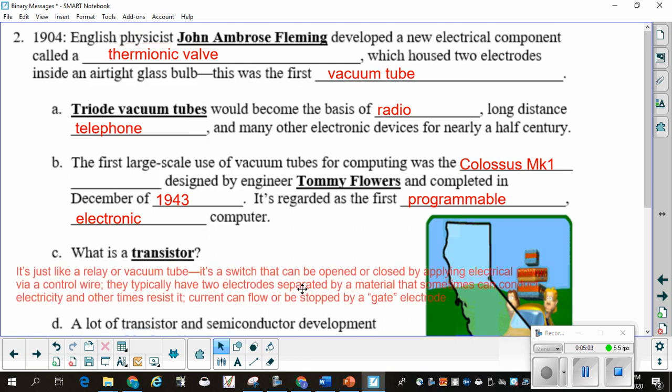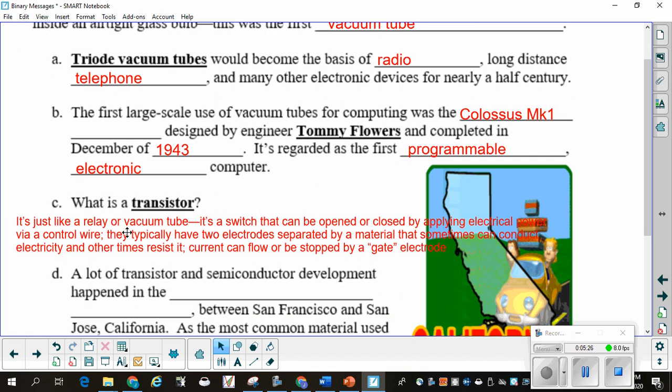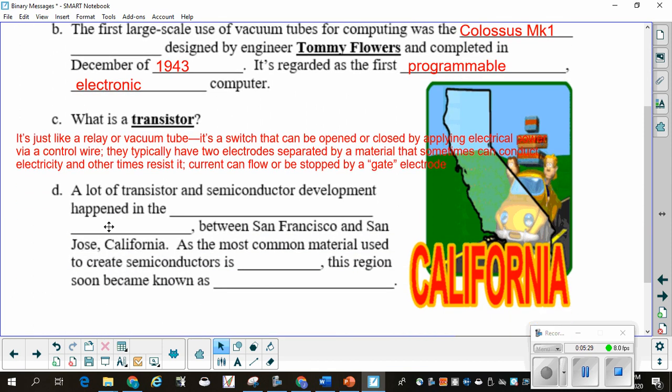A transistor. It's like a relay or a vacuum tube. It's a switch that can be opened or closed by applying electrical power via a control wire. Typically, you have two electrodes separated by material that sometimes can conduct electricity and other times resist it. Current can flow or be stopped by a gate electrode. It's similar to a relay or vacuum tube. A lot of transistor and semiconductor development happened in the Santa Clara Valley, between San Francisco and San Jose, California. As the most common material used to create semiconductors is silicon, this region soon became known as Silicon Valley.